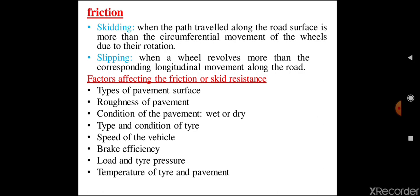The friction or skid resistance is dependent on some factors: types of pavement surface, roughness of the pavement, condition of the pavement, type and condition of the tire, speed of the vehicle, brake efficiency, load and tire pressure, and temperature of tire and pavement. If we consider different types of roads — bituminous, concrete, or gravel — each type has its own frictional coefficient. Friction may be more on a bituminous road and less on concrete roads.